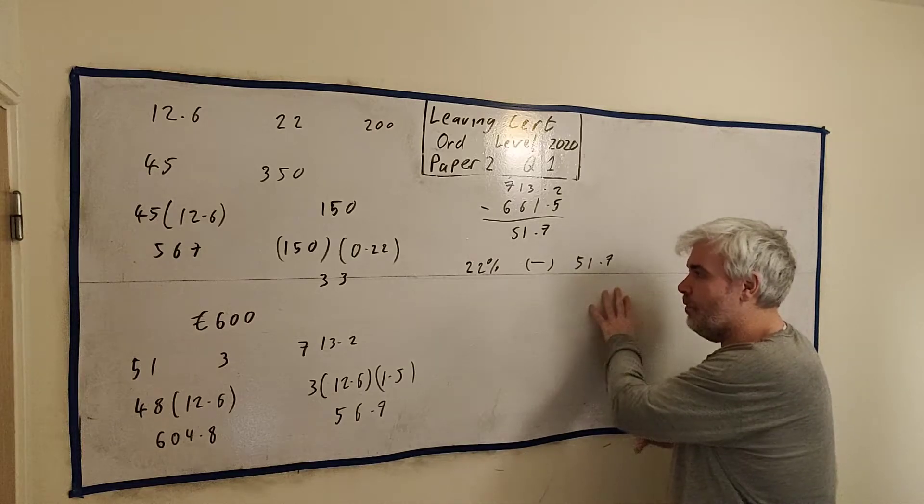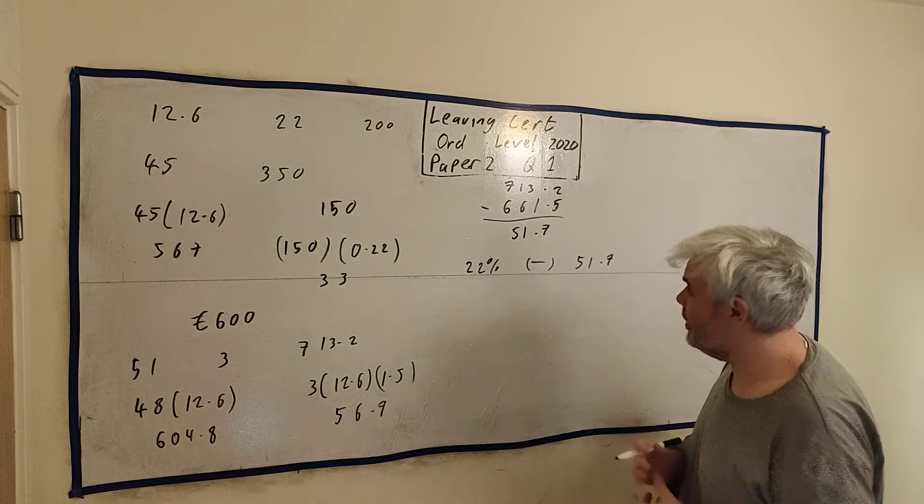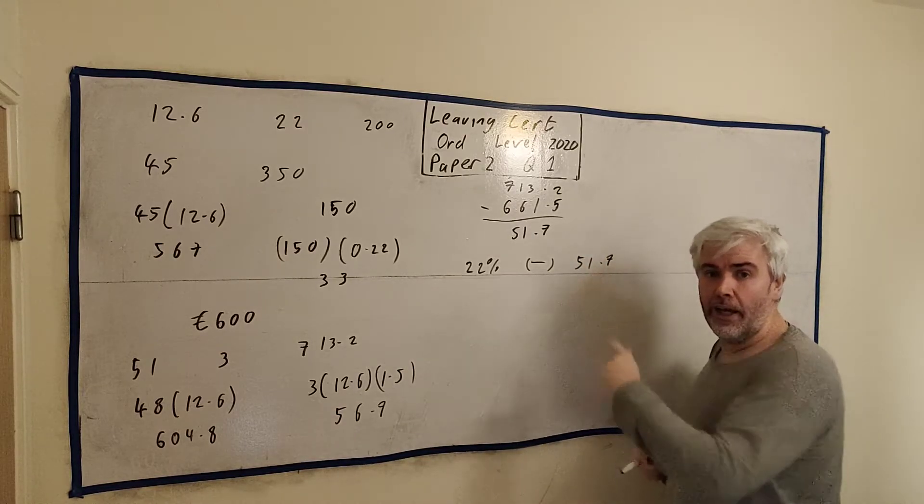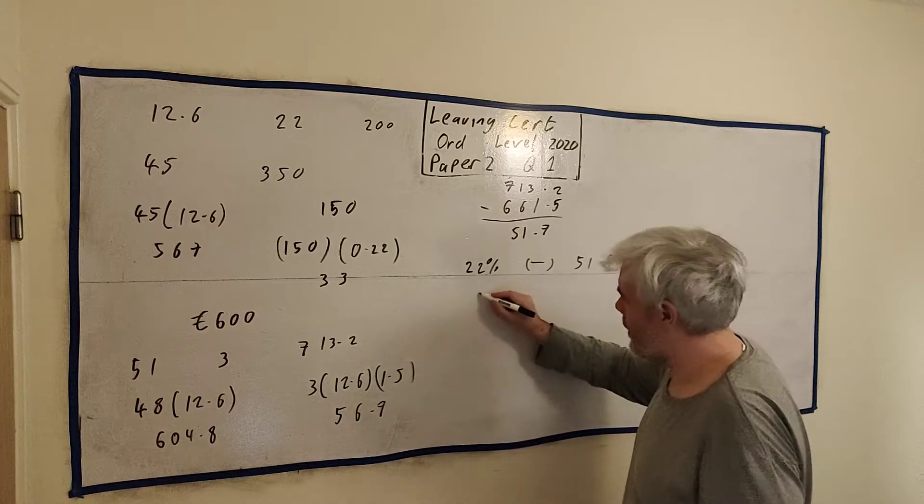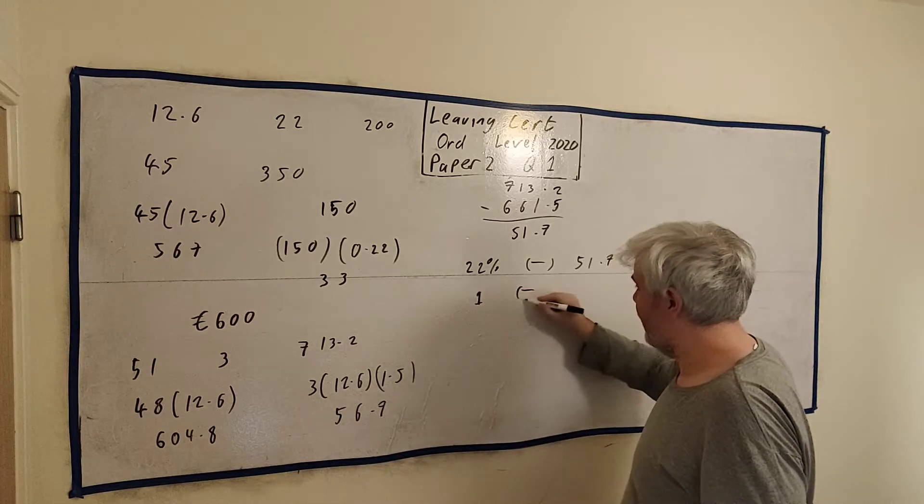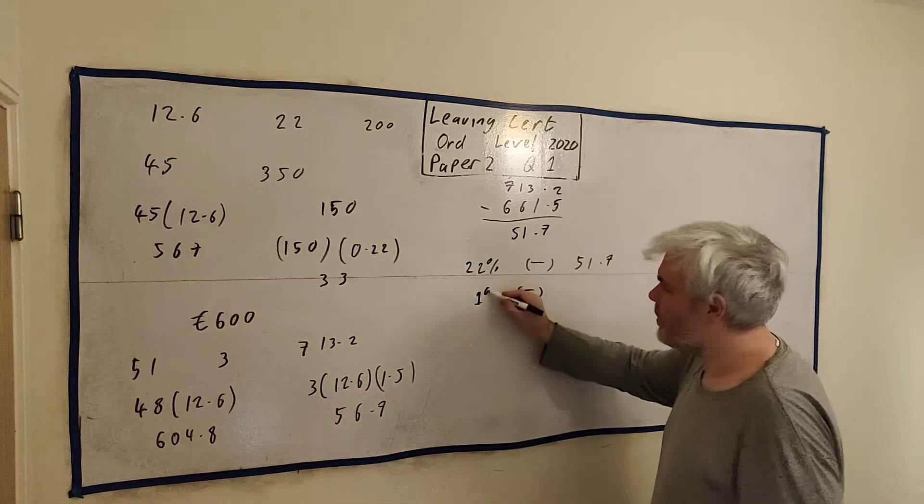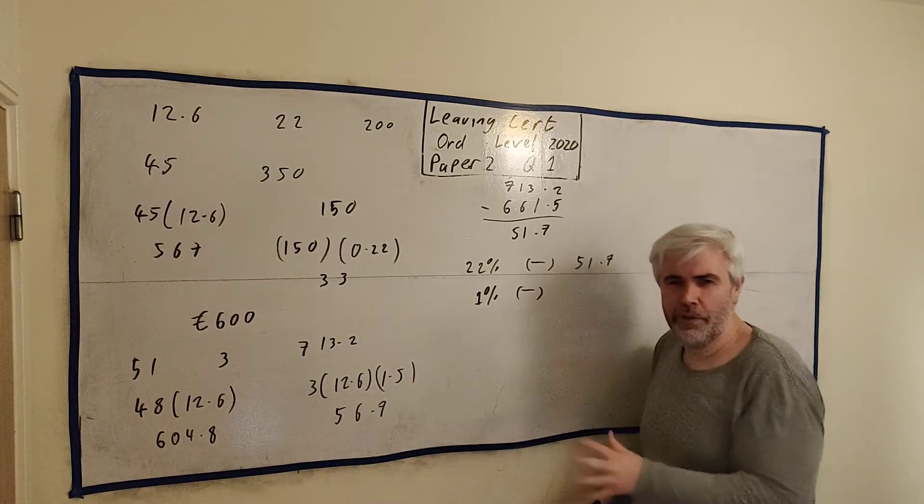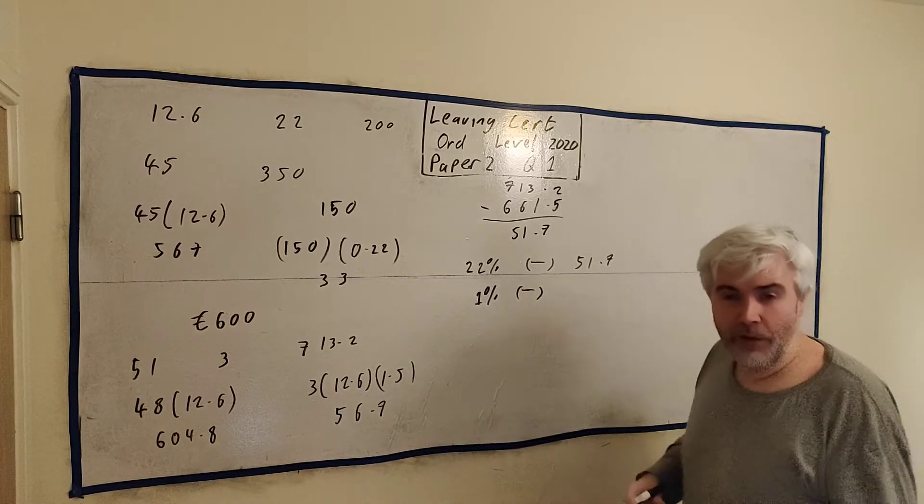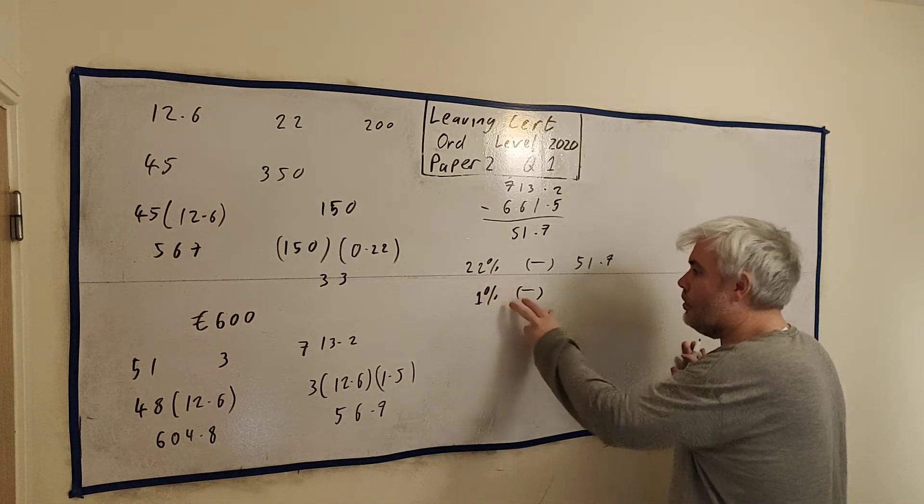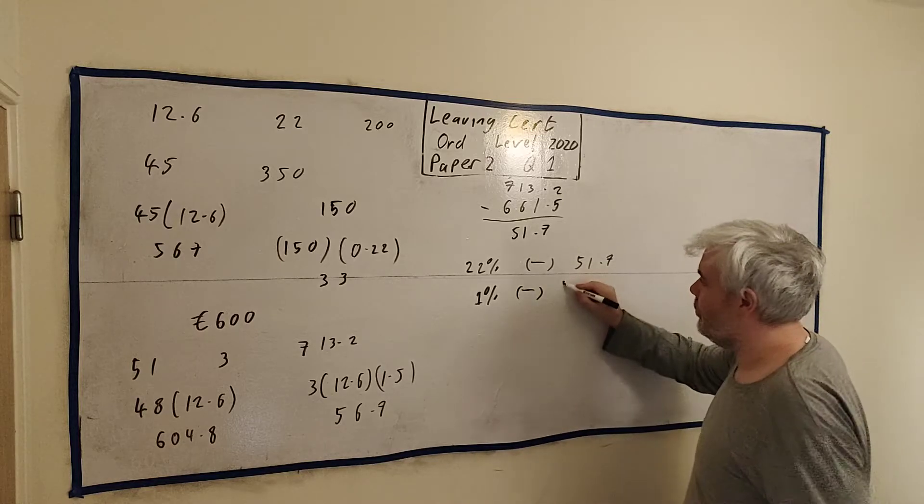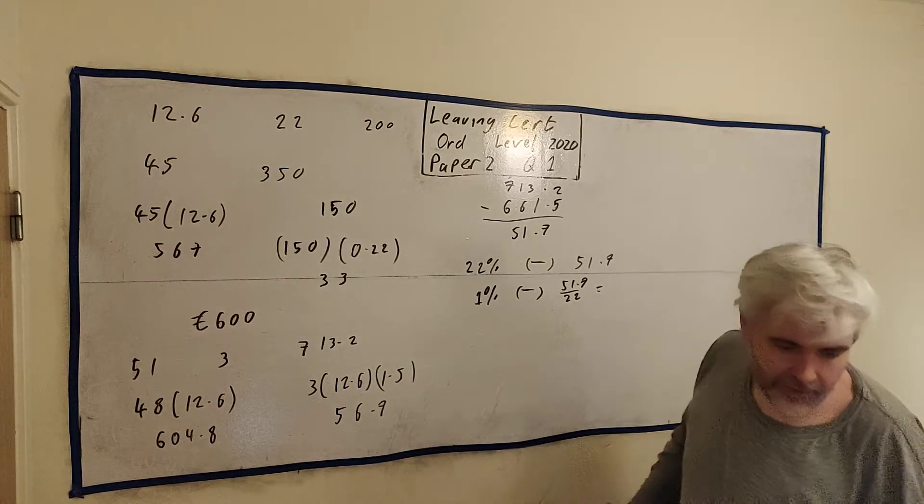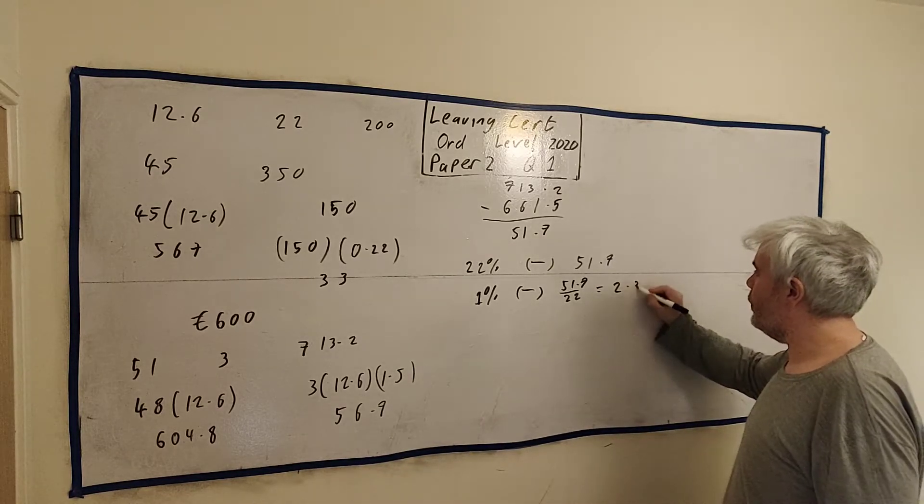So we want to know what the total amount was. We know what 22% was, what was the total amount? Some students are going to divide this by 22 and multiply it by 100. I like to do a slower way than that, but it's the same thing. If 22% is this, I like to find out what 1% is. I always find out what 1% is - it's a nice number that goes into everything. So if 22% is this, what's 1%? Well, I just divide it by 22. So 51.7 divided by 22, put it on a calculator and I get €2.35.